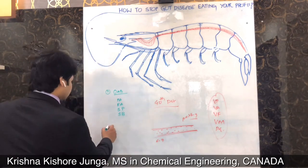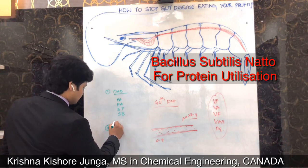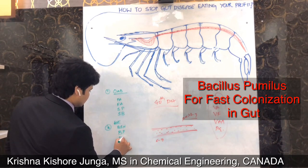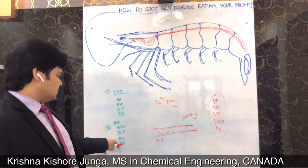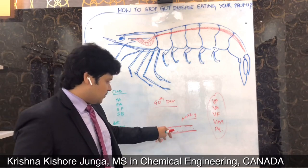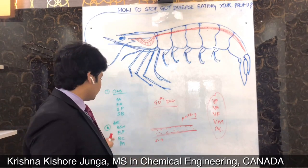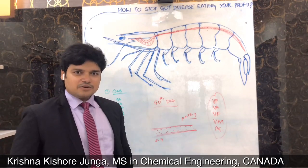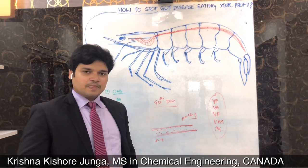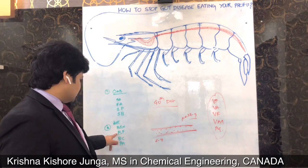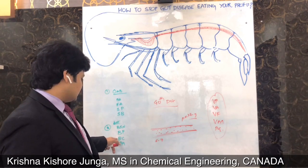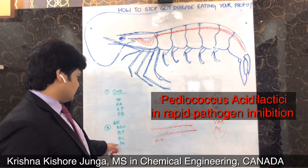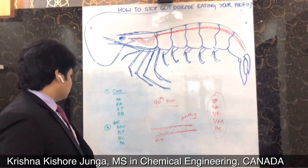The second step is to give a good Bacillus species and gut probiotics — mainly Bacillus subtilis, Bacillus amyloliquefaciens, Bacillus coagulans, and Pediococcus acidilactici. Once in the gut at the corrected pH, these probiotics will outnumber all pathogenic bacteria and the pathogens will have no food source, so the condition will be automatically controlled. Bacillus coagulans specifically helps with nutrient digestibility, and Pediococcus acidilactici helps with pathogen inhibition.